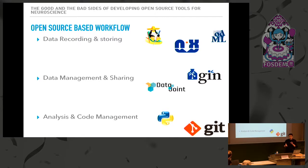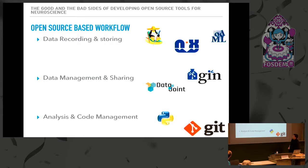With this I come to the tool chain we use, which is almost entirely based on open source — some of these tools we produce ourselves. There's the recording side: we use a tool called RELAX for recording. We store information in open formats like the NIX tool or ODML. We use different tools for data management: DataJoint or the GIN platform developed by the G-Node here. And of course we use open source during analysis and code management.